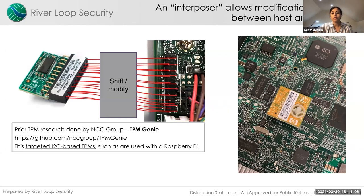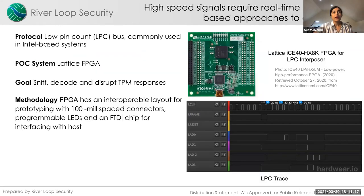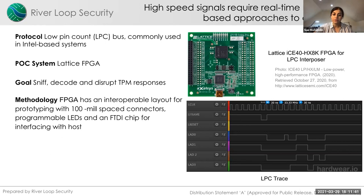This research also references past work done by NCC Group on their TPM Genie, which targeted I2C-based TPMs, but here we're targeting the Low Pin Count (LPC) bus. One of the key challenges was dealing with the high speeds of this bus, which operates at 33.3 MHz. To handle these high-speed signals we chose to implement our interposer on an iCE40 Lattice FPGA, which can handle the high-speed signals of the server and has an interoperable layout that made it ideal for quick prototyping.